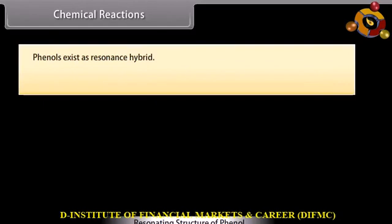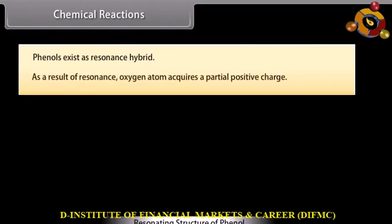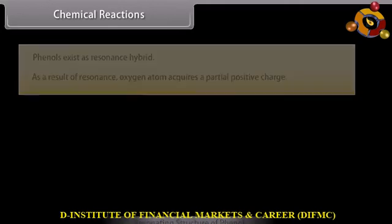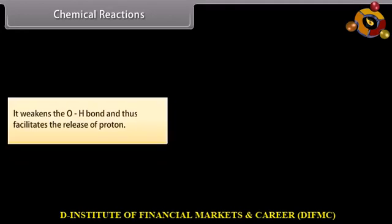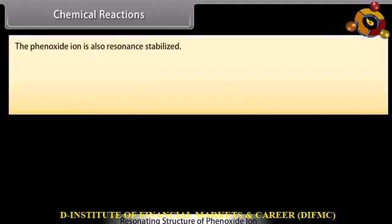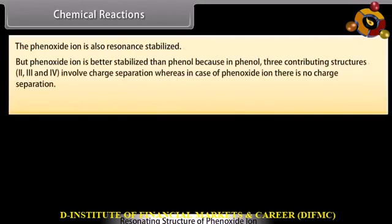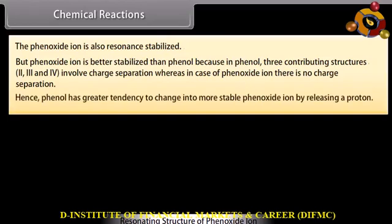Phenols exist as resonance hybrids. As a result of resonance, the oxygen atom acquires a partial positive charge. It weakens the O-H bond and thus facilitates the release of a proton. The phenoxide ion is also resonance stabilized, but the phenoxide ion is better stabilized than phenol, because in phenol, 3 contributing structures involve charge separation, whereas in the phenoxide ion there is no charge separation.